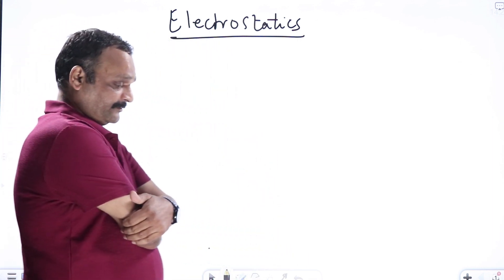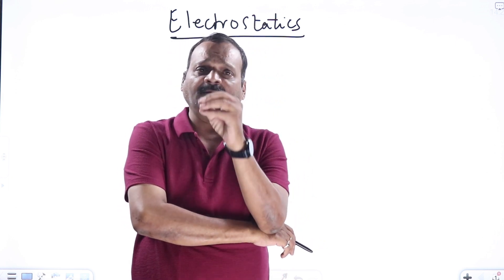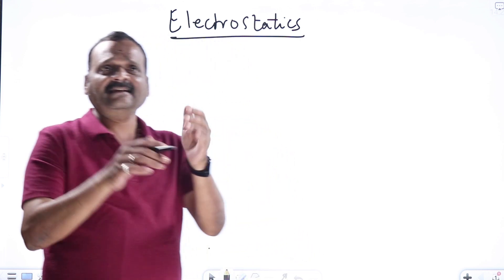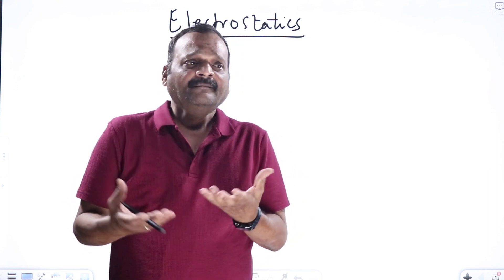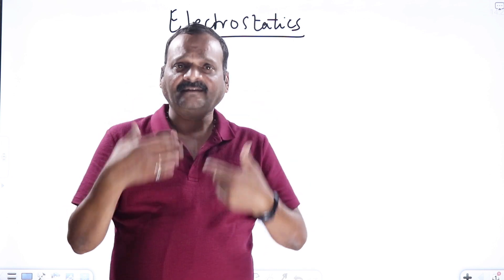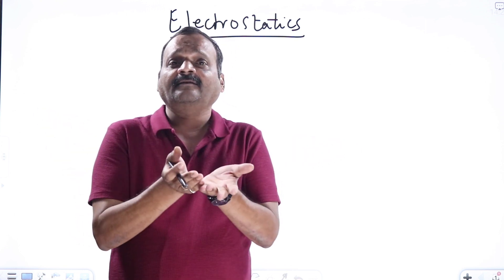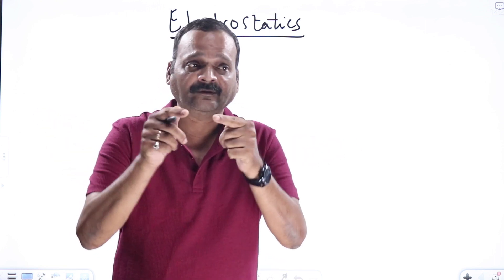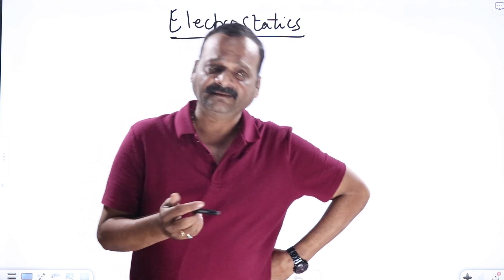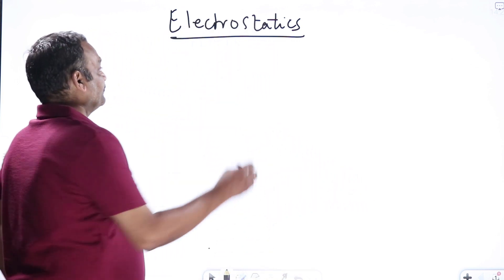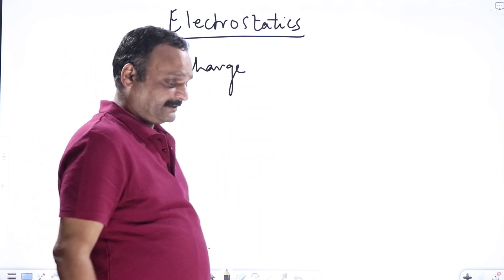Electrostatics is a subject which starts from something known as charge. Charge is a fundamental property of most of the particles, just like mass. Mass is a property — my mass, your mass means the amount of atoms or molecules or substances we have. But when we keep dividing, we go up to the atom; if you divide the atom you find an electron. The mass of the electron is 9.1×10⁻³¹ kg — nobody knows what that means, it's just a fundamental property. Similarly, charge is also found to be a fundamental property of particles, just like mass and time.